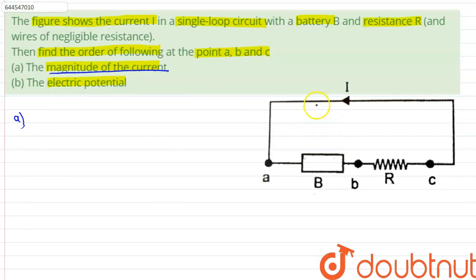As we know that it is given to us that this is a single loop circuit and therefore there is no distribution of current anywhere. Thus the same current I runs throughout the circuit.